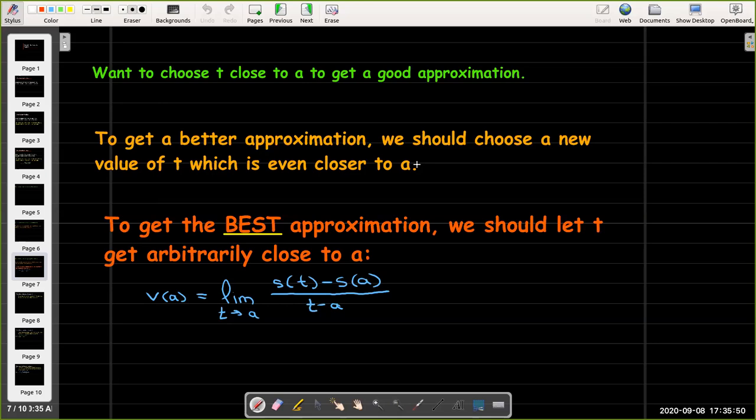And now we can say to get the best approximation, that is the exact value of the velocity, we should let t get arbitrarily close to a. And we do that using the limit. So we'd say the velocity at a is the limit as t approaches a of the quotient s(t) minus s(a) over t minus a.